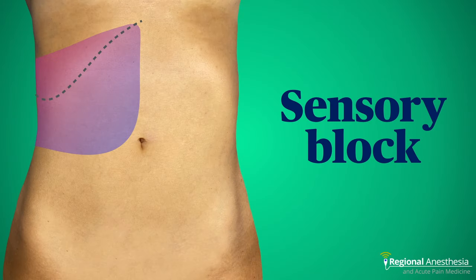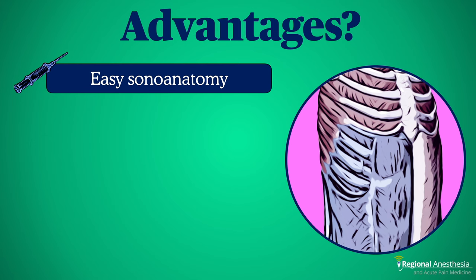Here's the expected sensory coverage from an external oblique intercostal block, representing blockade of both the anterior and lateral cutaneous branches of roughly T6 to T9 or T10. There are several attractive aspects to this block. First, it's easy sonoanatomy — ribs, one strip of muscle, that's it. No trying to deduce which muscle is which, or which plane is which. Even in heavy patients, this sonoanatomy is reliably easy to see.